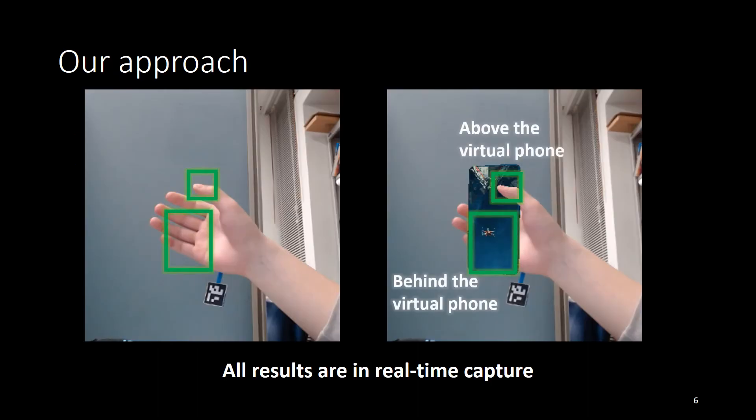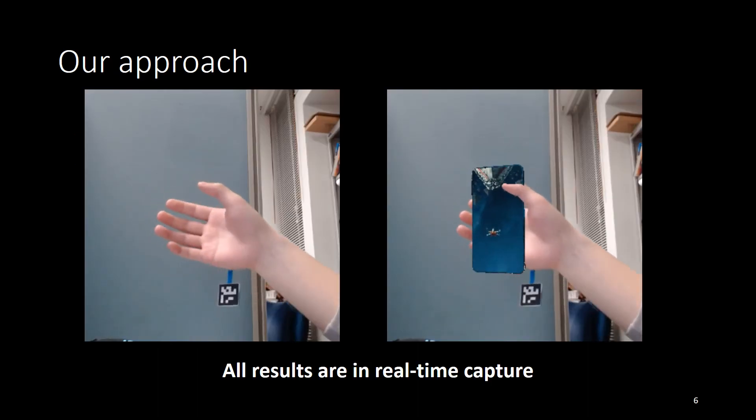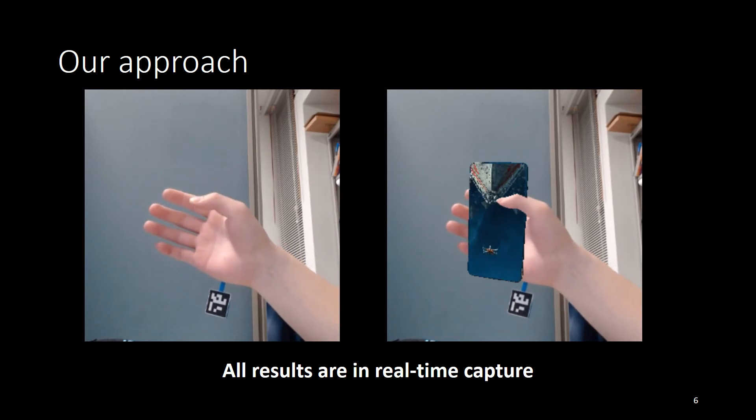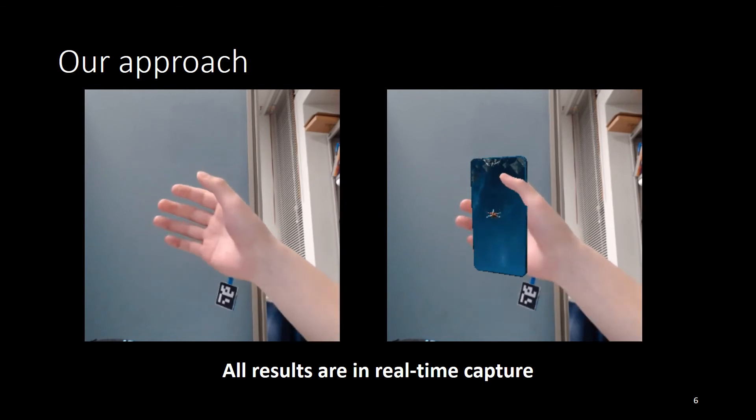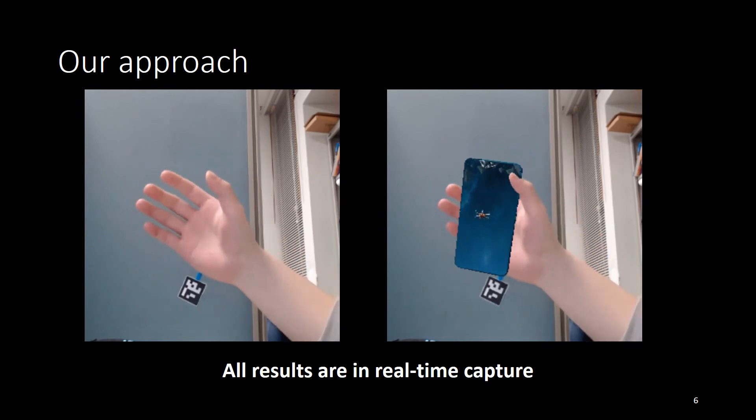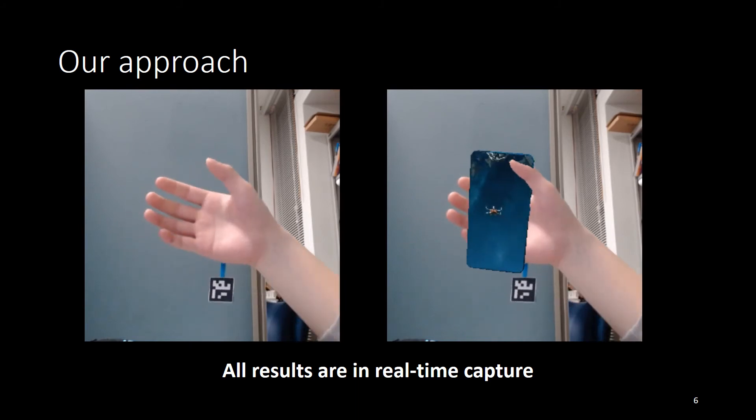Here is the result of our approach. The palm is behind the virtual phone and the thumb is above the virtual phone. With proper occlusion, the virtual phone is composed into the real environment to make the user feel that he is actually grabbing and interacting with the real object.